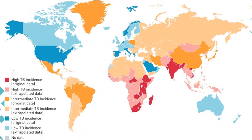If you look at this map, Africa — especially eastern and southern Africa — and Asia have a very high level of TB. The lowest TB levels are in North America, Western Europe, and Australia.